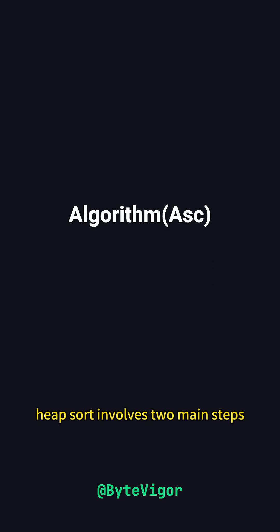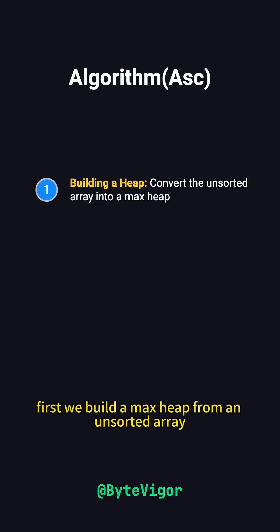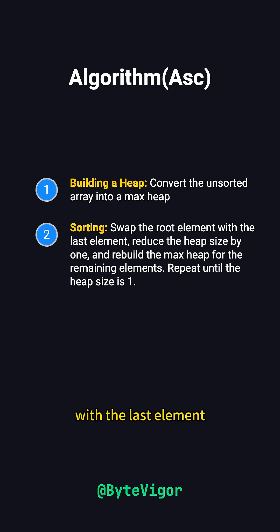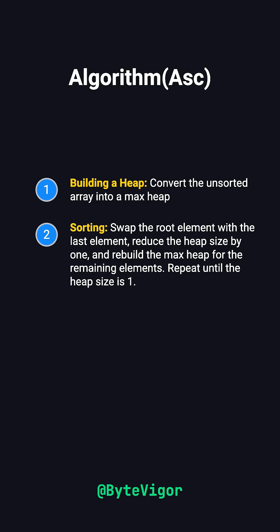Heapsort involves two main steps. First, we build a max heap from an unsorted array. Then, we repeatedly swap the root of the heap — the largest element — with the last element, reduce the heap size by one, and rebuild the max heap for the remaining elements. This continues until only one element is left in the heap.